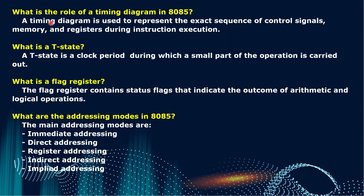What is the role of a timing diagram in 8085? The timing diagram is used to represent the exact sequence of control signals, memory, and registers during instruction execution. What is a T-State? A T-State is a clock period during which a small part of the operation is carried out. What is the flag register? The flag register contains status flags that indicate the outcome of arithmetic and logical operations. There are five flags: carry, auxiliary carry, parity, zero, and sign flag.